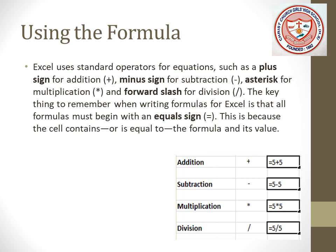This is subtraction — first we give the equal sign, then we use 5 minus 5. For multiplication, we use the asterisk or star sign.